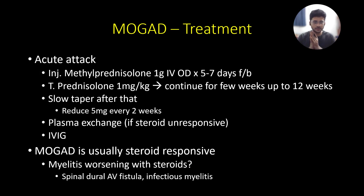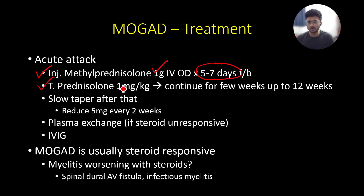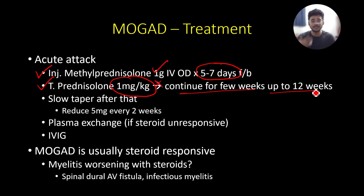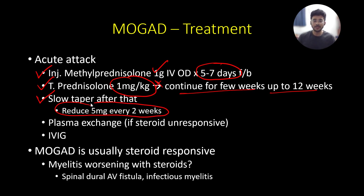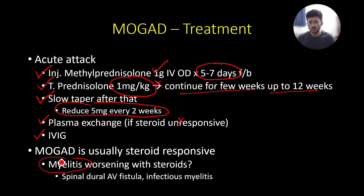For treatment of MOGAD, it's very similar to NMOSD. Remember that MOGAD is exquisitely steroid responsive. Pulse steroids — injection methylprednisolone 1 gram IV once daily over 5 to 7 days — followed by oral prednisolone 1 mg/kg. Do not taper rapidly as you would for multiple sclerosis; continue the full dose at least for a few weeks and up to 12 weeks, then taper slowly at 5 mg every two weeks. If steroid-unresponsive, consider plasma exchange or intravenous immunoglobulin. Note: if a transverse myelitis patient worsens with steroids, consider infectious myelitis or spinal dural AV fistula.